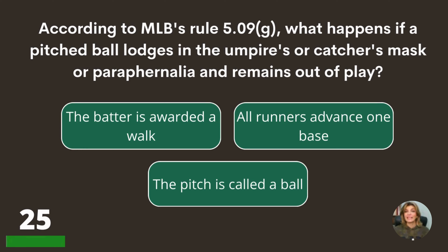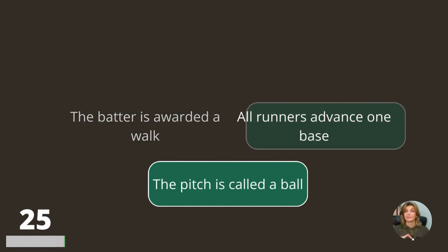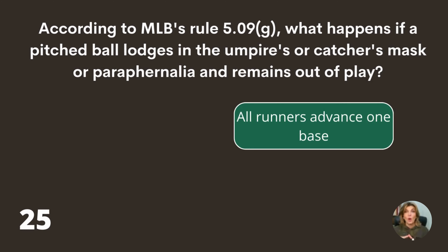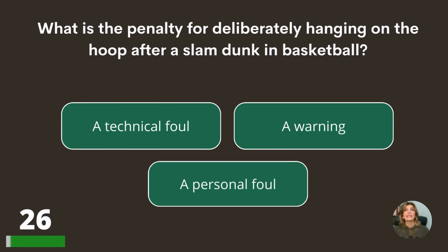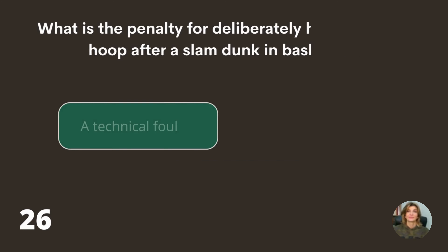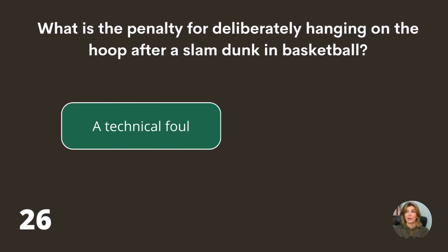According to Major League Baseball's rule, what happens if a pitched ball lodges in the umpire's or catcher's mask or paraphernalia and remains out of play — the batter is awarded a walk, all runners advance one base, or the pitch is called a ball and all runners advance one base? What is the penalty for deliberately hanging on the rim after a slam dunk in basketball — a technical foul, a warning, or a personal foul? A technical foul.